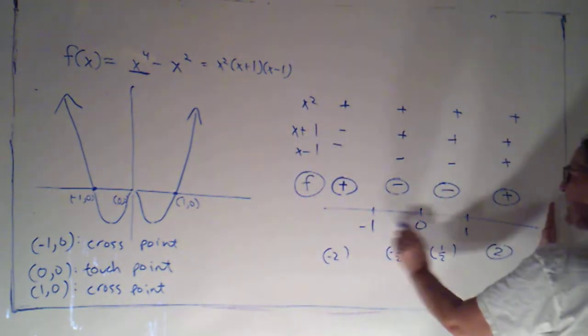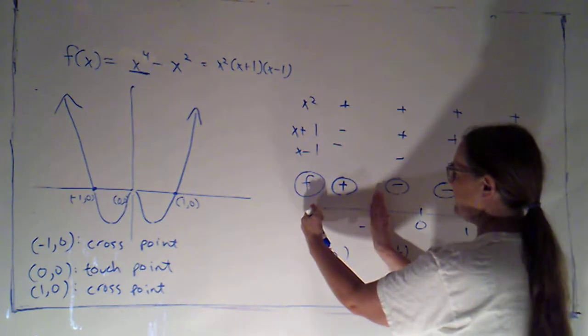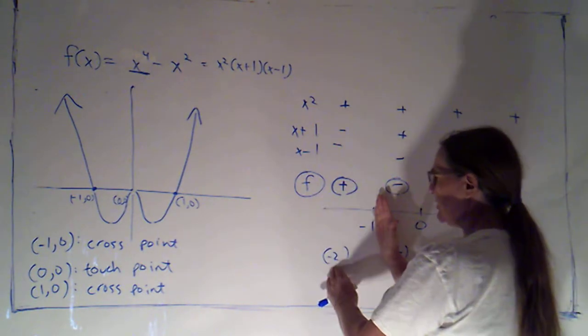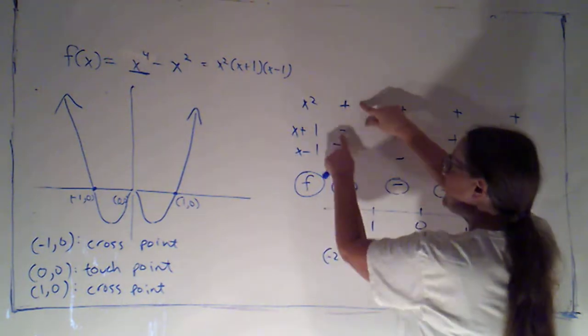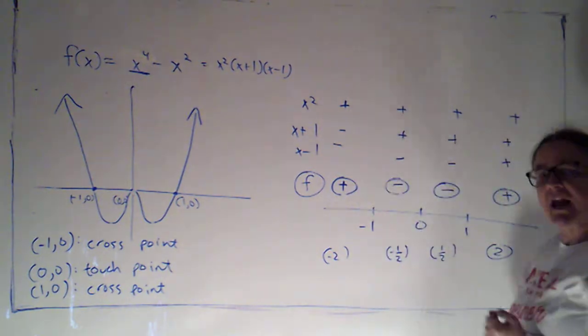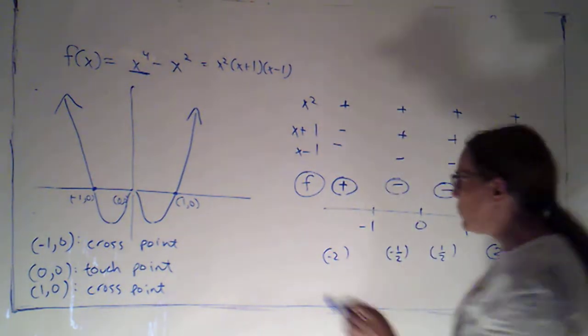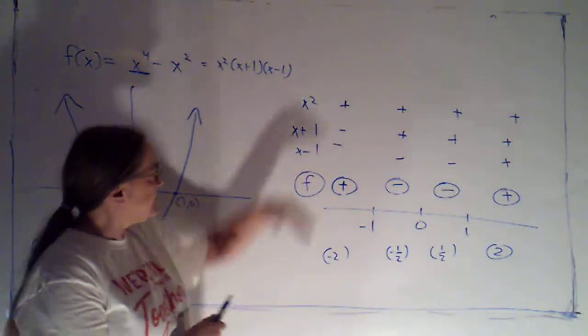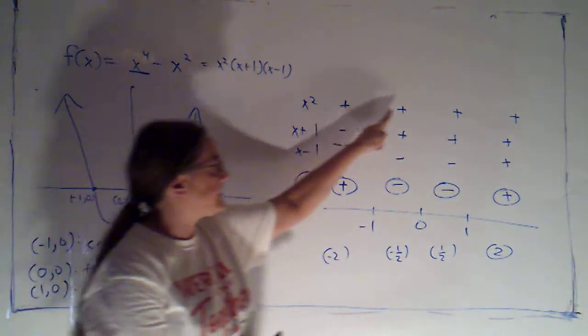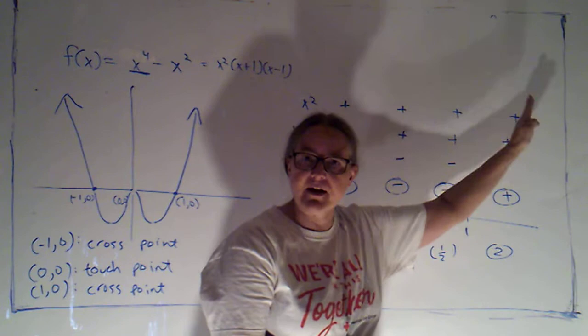Now, when we were filling out this number line, I generally looked at one interval at a time. I said, if I'm to the left of negative 1, I'm plugging in negative 2, and I plugged it into each of these factors and then determined the sign of f. But I could also have thought of it more one factor at a time. I did that a little bit with the x-squared, because I said x-squared is just going to be positive, positive, positive, positive, all the way across.